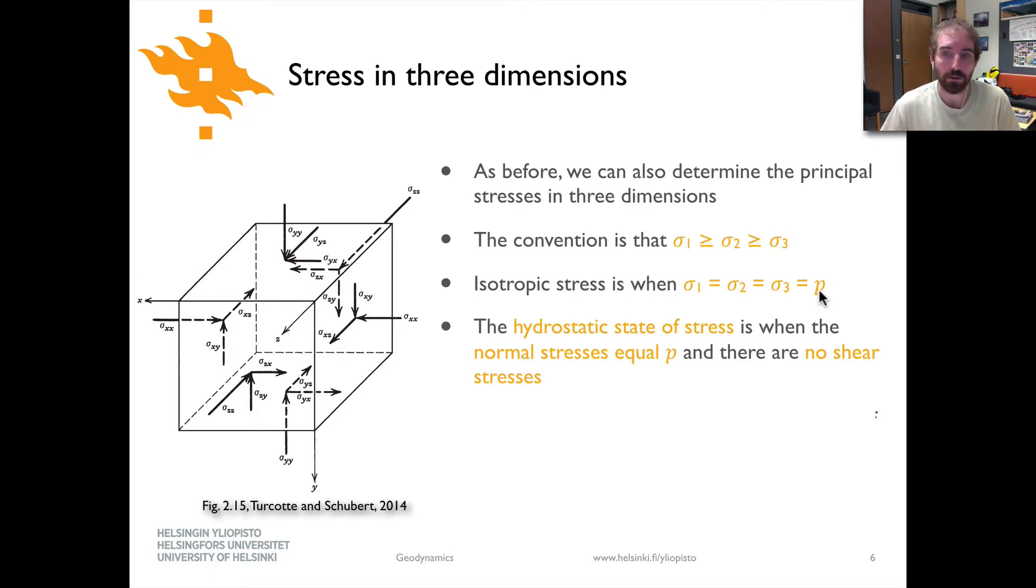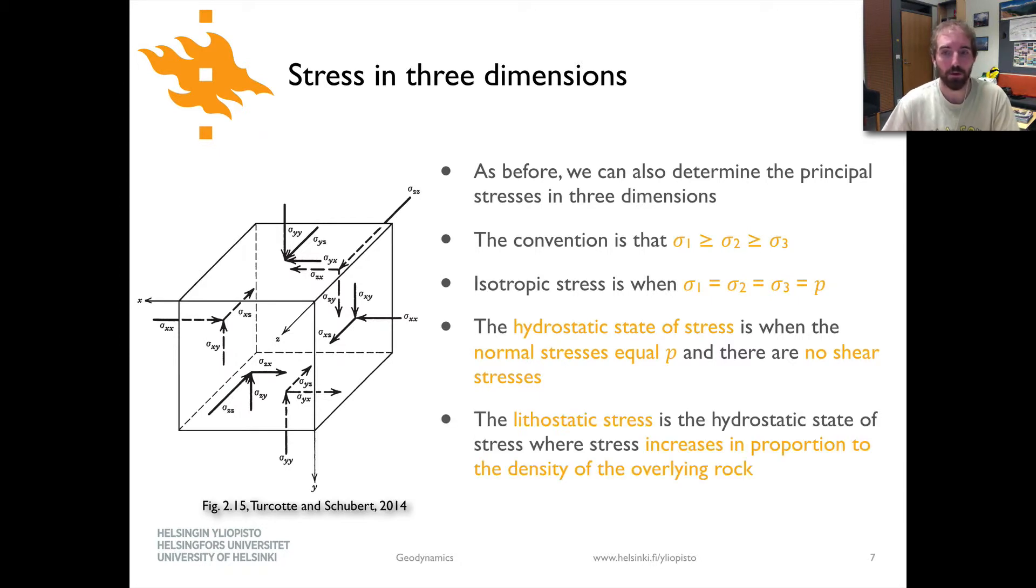And here we can see that they're equal to the pressure or mean stress. The reason I keep saying mean stress is the average stress. It would be sigma 1 plus sigma 2 plus sigma 3 divided by 3. If all three of these are equal then they're also equal to P or the pressure.